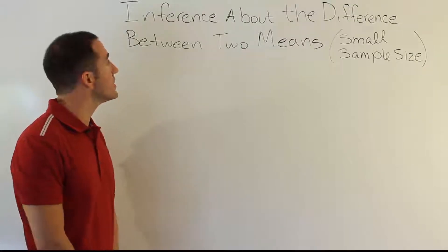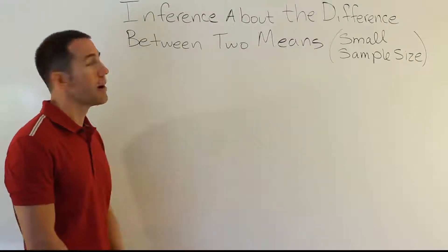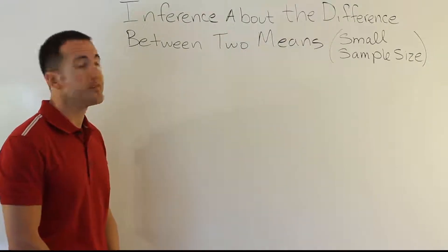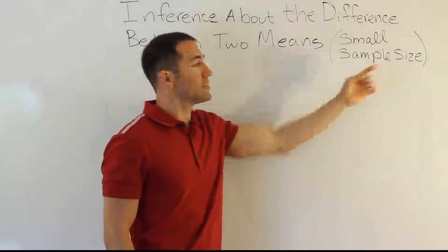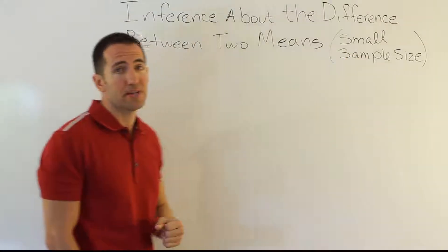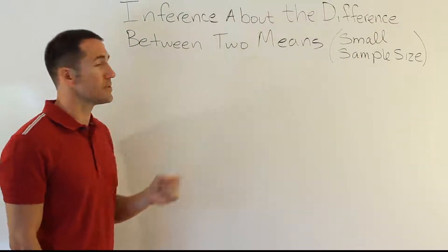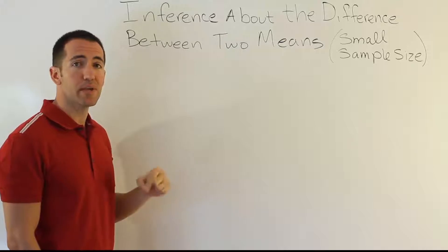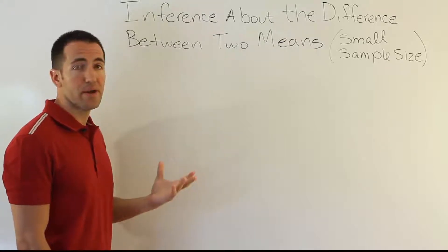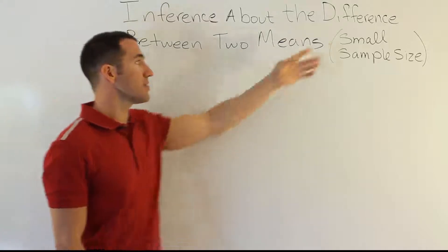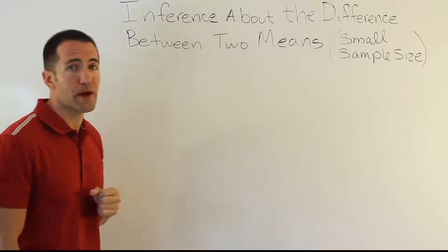In this video we're looking at the inference procedure devoted to comparing two population means when small sample sizes are present. We've done this before with large sample sizes. With large sample sizes, we can assume normality. With small sample sizes, we're unable to assume normality.